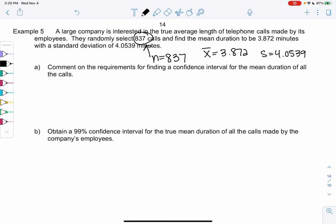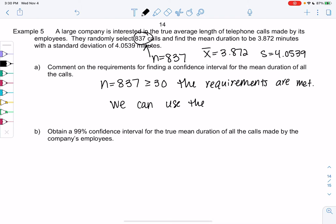Let's comment on the requirements before we actually make an interval. My sample size is nice and big. I don't care about the shape at all. Since I have 837, which is greater than or equal to 30, the requirements are met. We can use the normal curve. No hoping - the requirements are met.